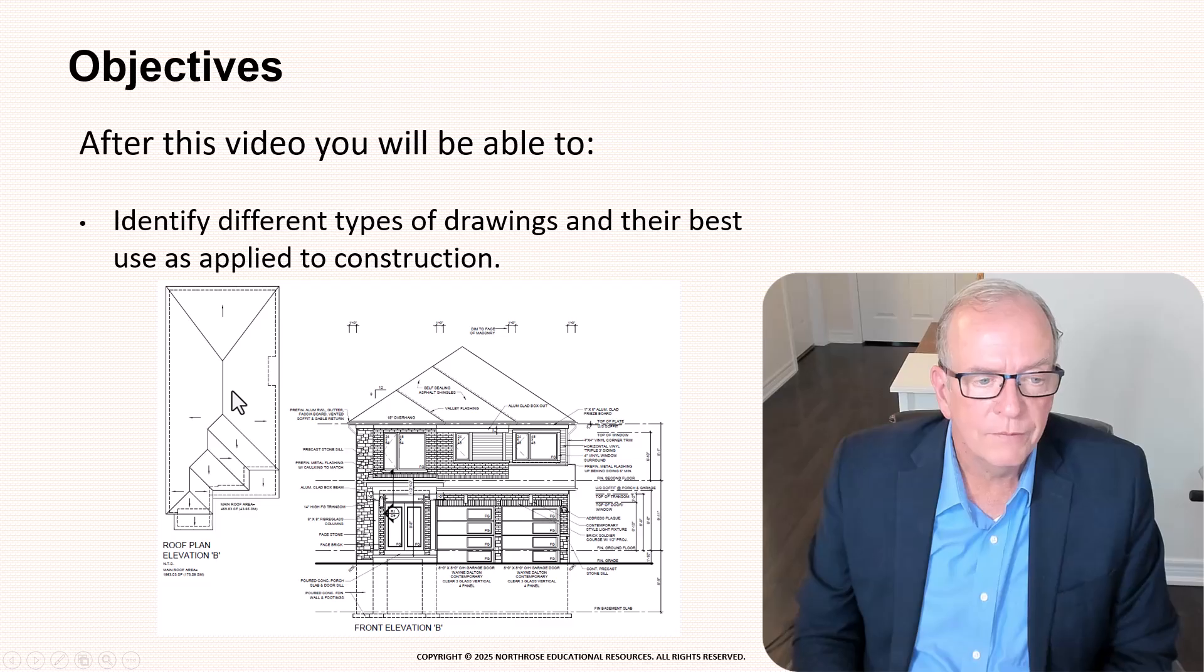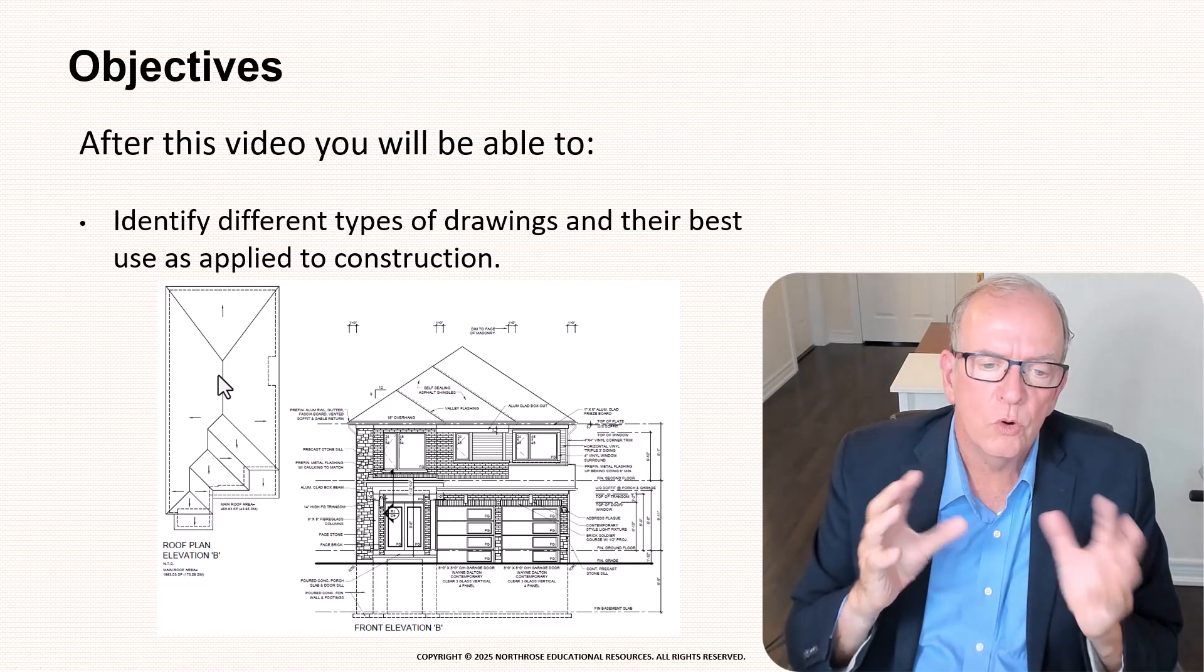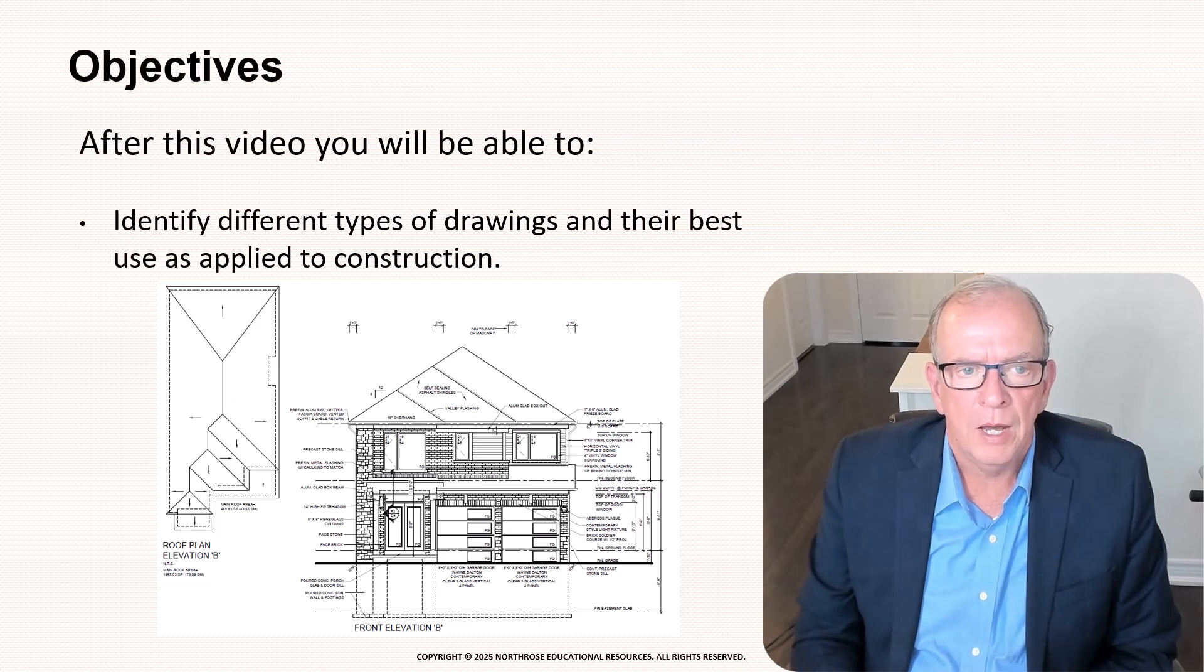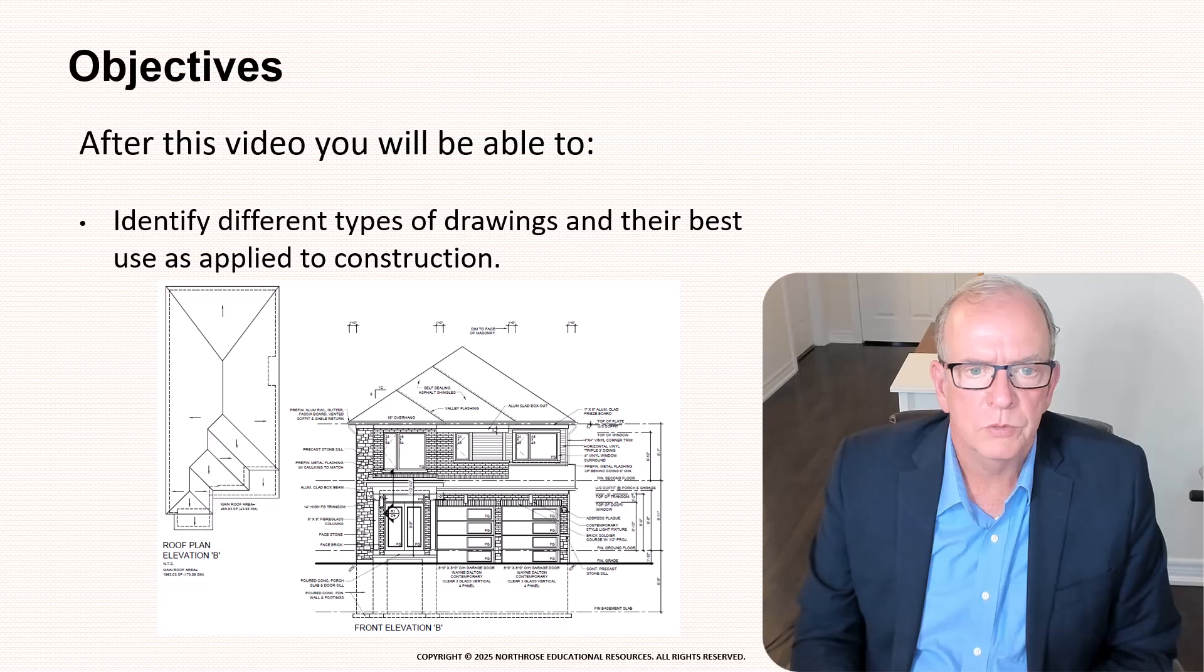This is also an orthographic drawing. This is a roof plan so this is looking from high above straight down and you'll see some drawing types give you more information than others and there's reasons and logic behind that which I'll jump into as we go along.